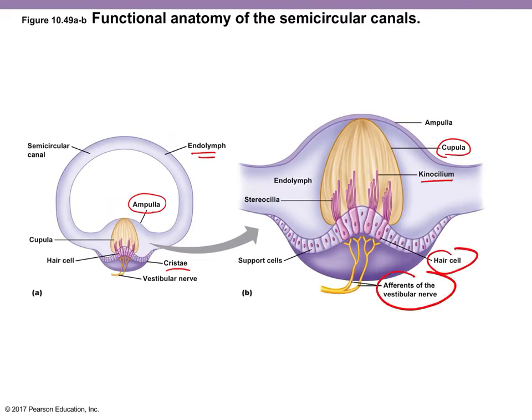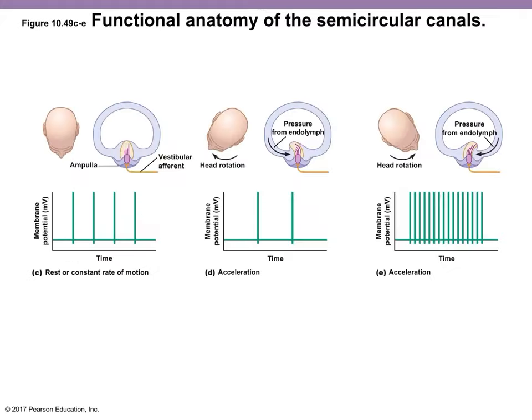These specialized hair cells synapse with the afferent vestibular nerve. At rest or at a constant rate of motion, there are a few action potentials telling your brain your head is in a certain position. When you accelerate or rotate your head, pressure from the endolymph bends the stereocilia — the canal moves but the endolymph lags behind. Depending on the direction of bending, you get either a few or many action potentials.